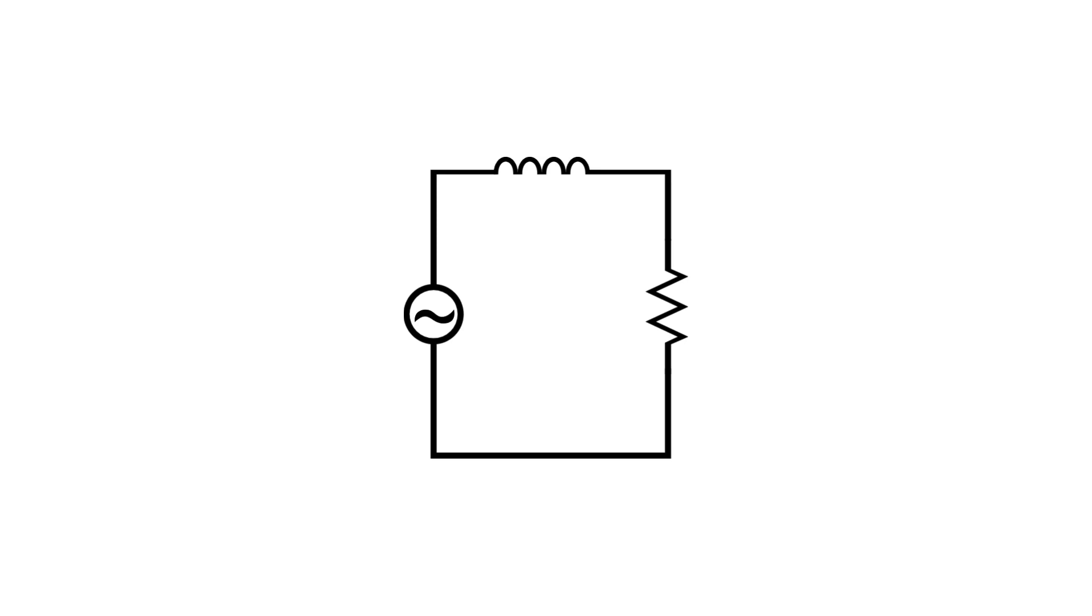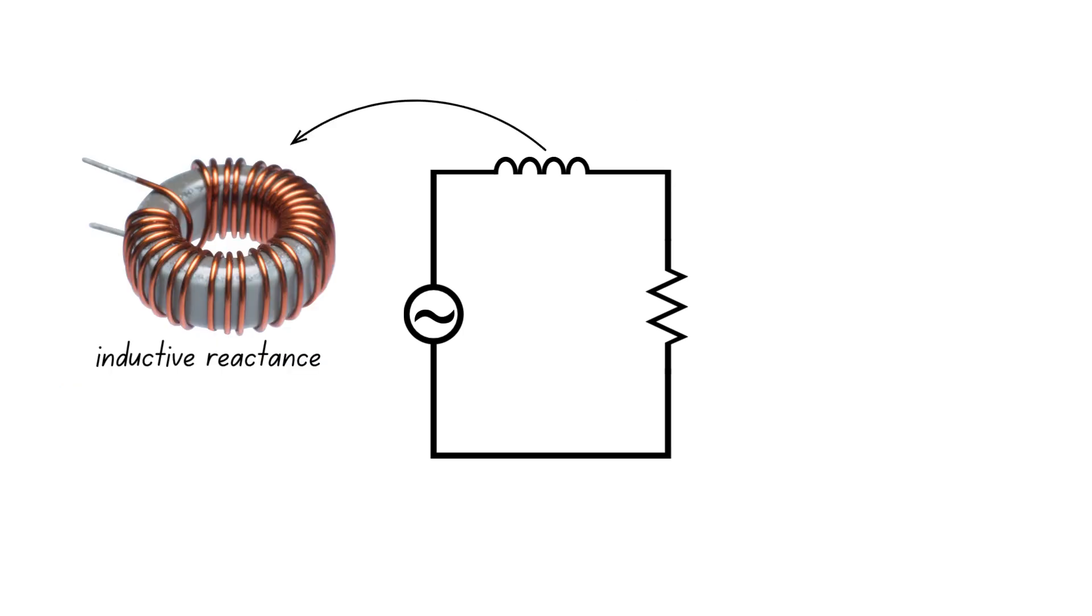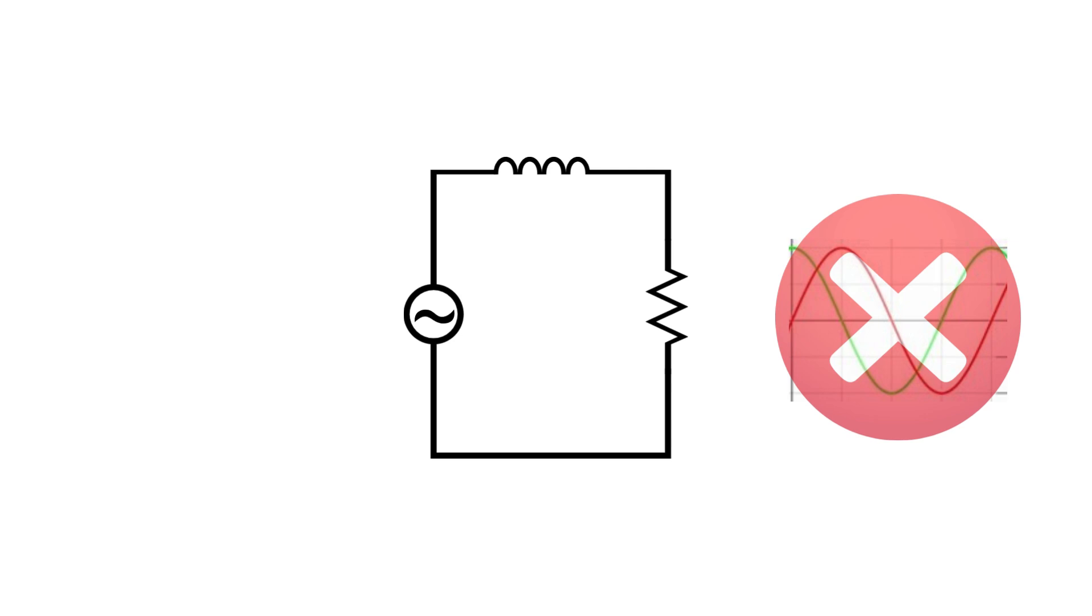Consider this circuit, for instance. The combined opposition to current flow due to the resistor and the inductor is known as impedance. Keep in mind that inductive reactance causes alternating current to lag behind the supply voltage by 90 degrees while resistance offers no phase shift.